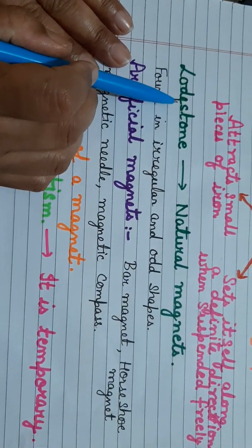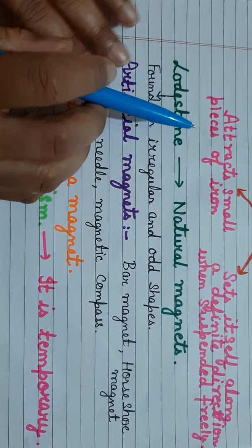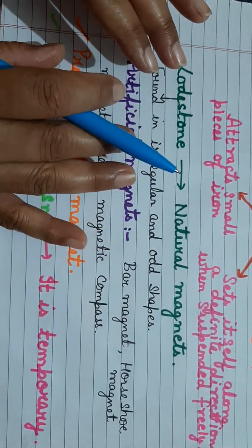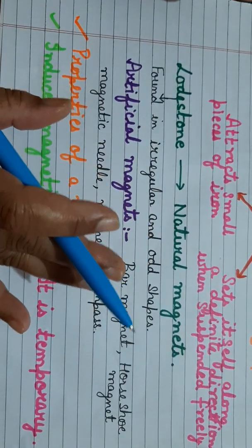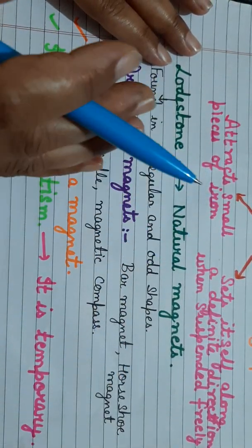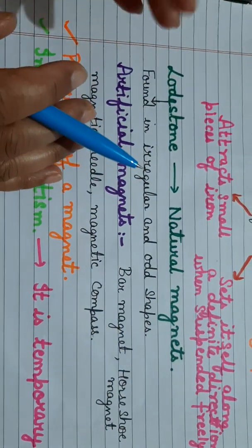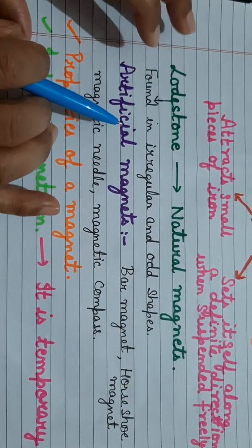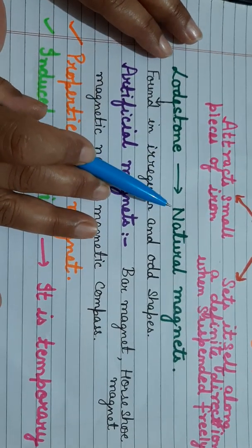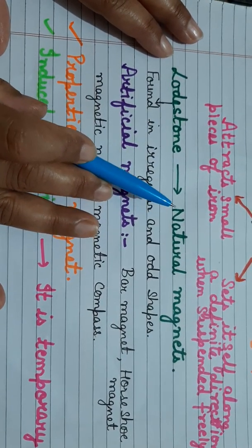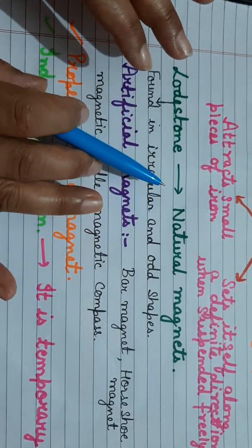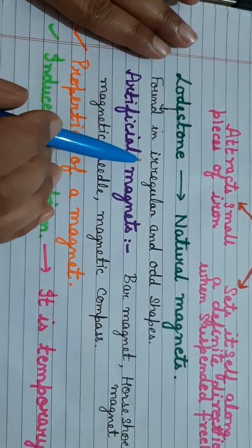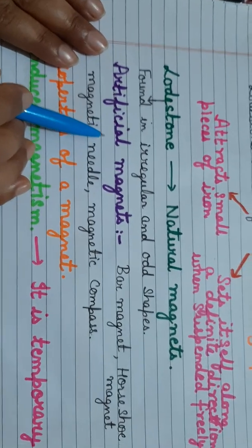Initially, lodestone does not have any proper shape — it is irregularly shaped with different odd shapes. When it is brought out from the earth's crust it can be given a shape and used as a natural magnet. However, a natural magnet is a weaker magnet, so for practical purposes we make our own magnets, known as artificial magnets.